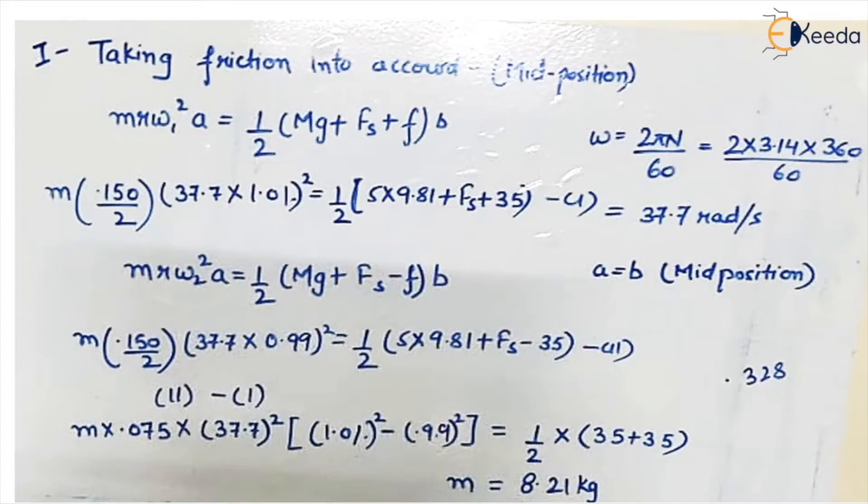Now we will solve it for the first part where we take friction into account. So the equation is MR omega 1 square A equals half weight of sleeve plus the spring force plus friction into B. Now what is A? A is the vertical distance from the end of bell crank lever where it holds the ball to its midpoint, and B is the horizontal distance between the midpoint of the bell crank lever and the point which holds the roller.